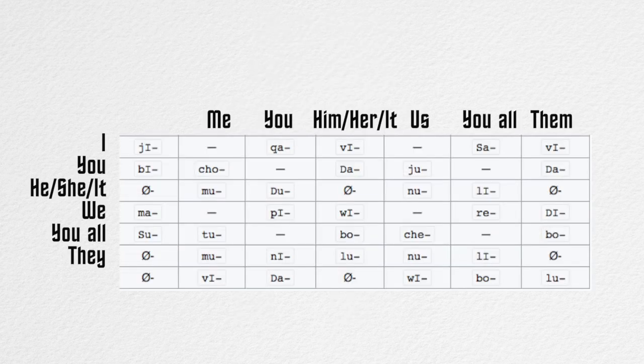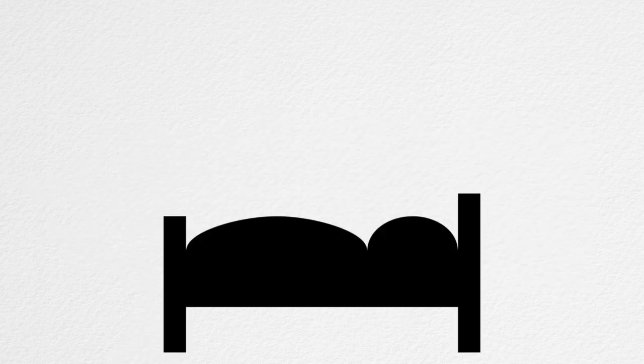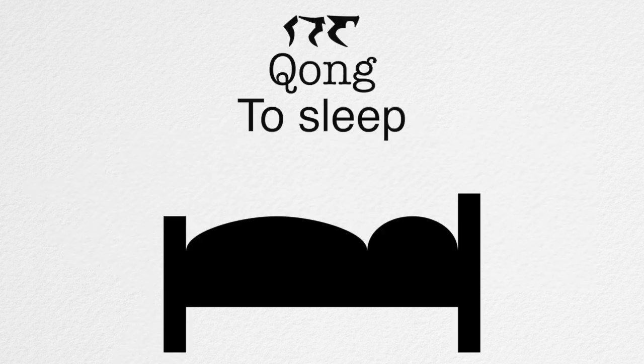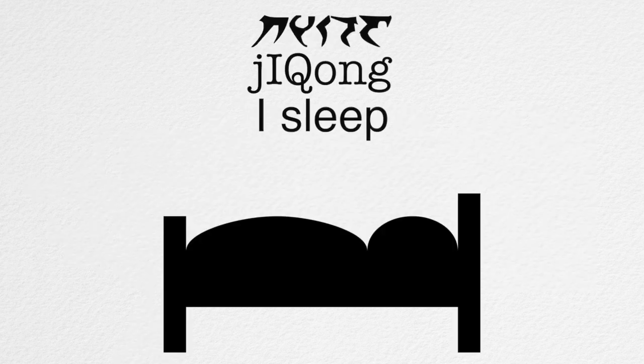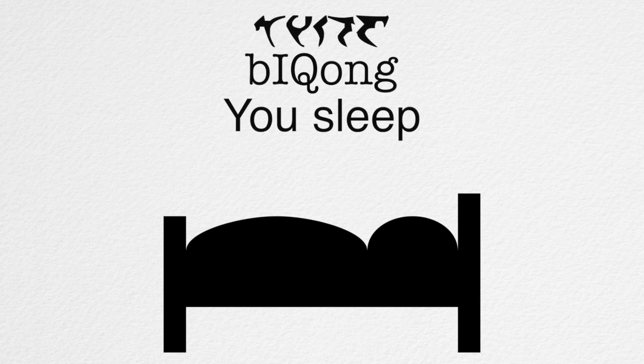Here's a graph to make it easier to understand. By the way, if it's just you doing the action, just use the column on the furthest left, where the object is nothing. So for example, 'Khong' is 'to sleep,' 'Jkong' is 'I sleep,' 'the Khong' is 'you sleep,' etc.